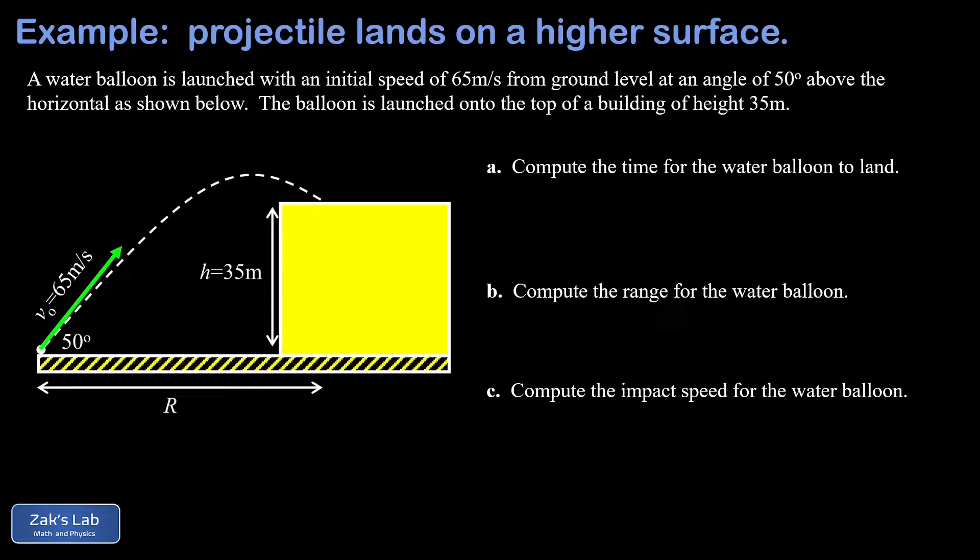In part A, we want the time for the water balloon to land on top of that building. In part B, we're getting the range of the flight, in other words, the horizontal displacement. And then in part C, we want the impact speed when the water balloon hits that building. Like practically all these problems,